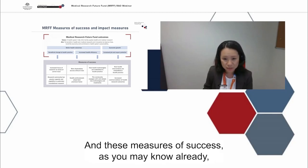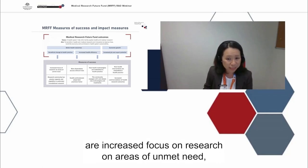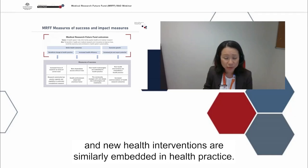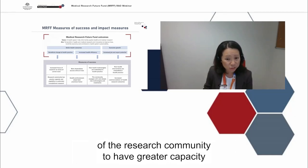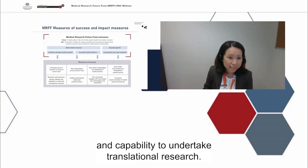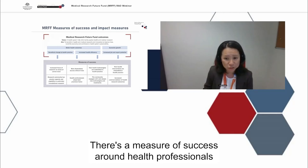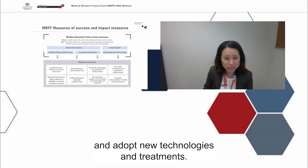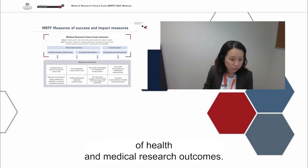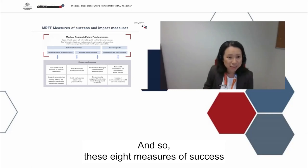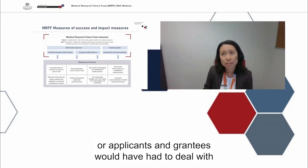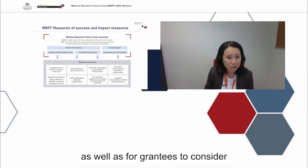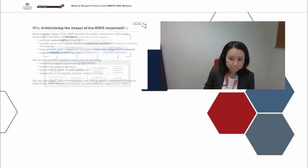The eight measures of success are: increased focus of research on areas of unmet need, more Australians access clinical trials, new health technologies are embedded in health practice, new health interventions are similarly embedded in health practice, greater capacity and capability of the research community to undertake translational research, health professionals being able to adopt new practices faster, the ability of the community to engage with and adopt new technologies and treatments, and the increased commercialisation of health and medical research outcomes. These are something applicants and grantees would have had to deal with in putting together applications for MRFF opportunities, as well as for grantees considering their progress reports.